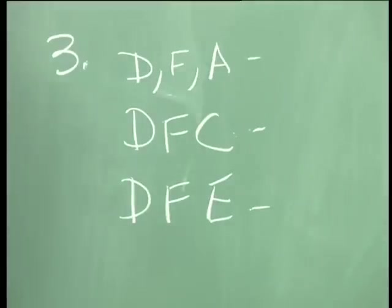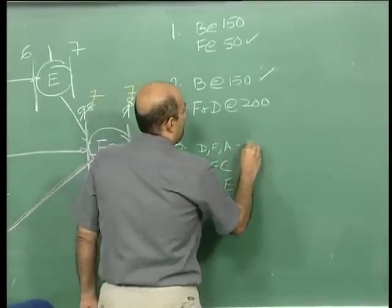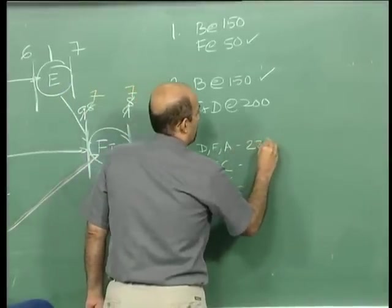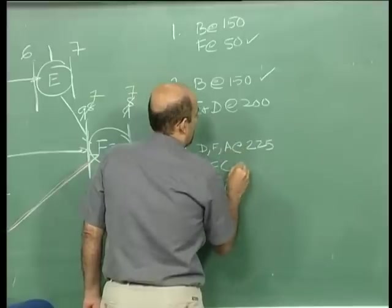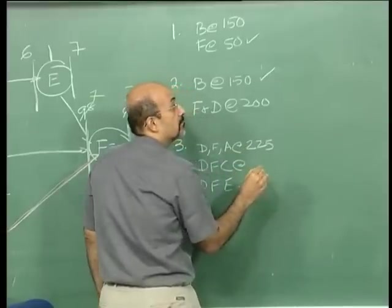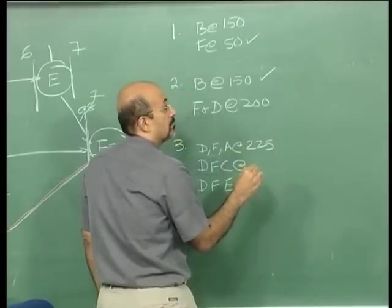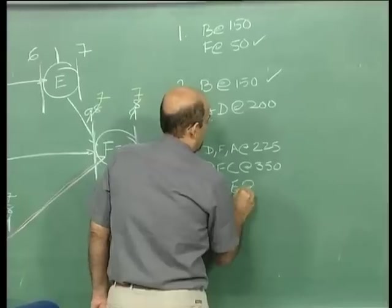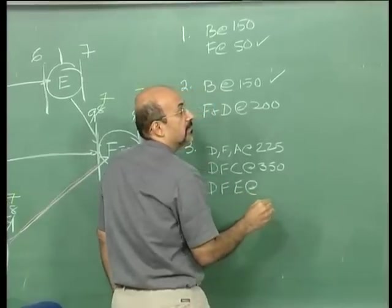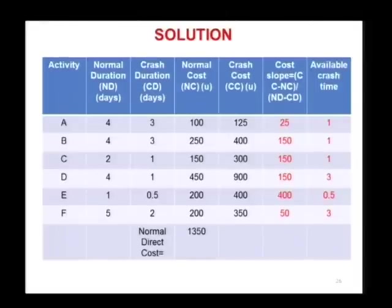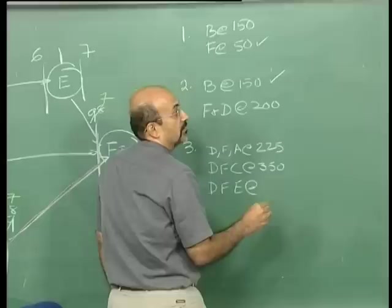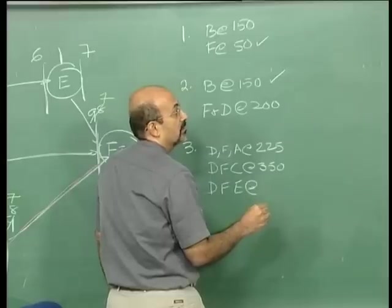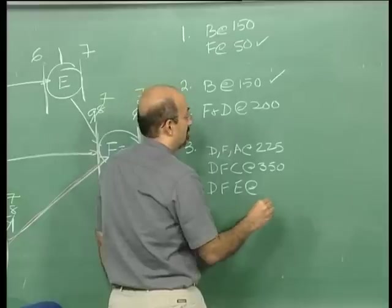What are the values? D, F, A: 225. D, F, E is expensive to crash — D is 550, 600. So the combination costs are 225 for DFA, approximately 550-600 for DFE.